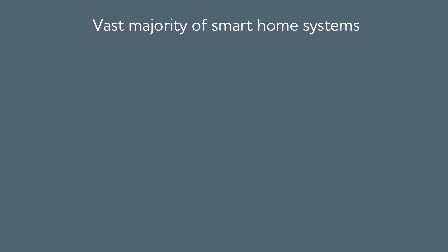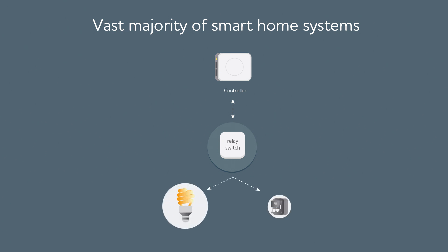A controller forms the basis of the vast majority of smart home systems. It acts as the smart home brain, controlling all the devices, scenes, and rules of automation. The controller sends a command, and for example, the remote control relay switches the connected device — it could be a lamp or a coffee machine.